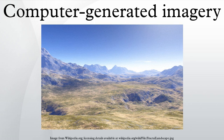Computer animation can allow a single graphic artist to produce content without the use of actors, expensive set-pieces, or props. To create the illusion of movement, an image is displayed on the computer screen and repeatedly replaced by a new image that is similar to the previous image but advanced slightly in the time domain. This technique is identical to how the illusion of movement is achieved with television and motion pictures.